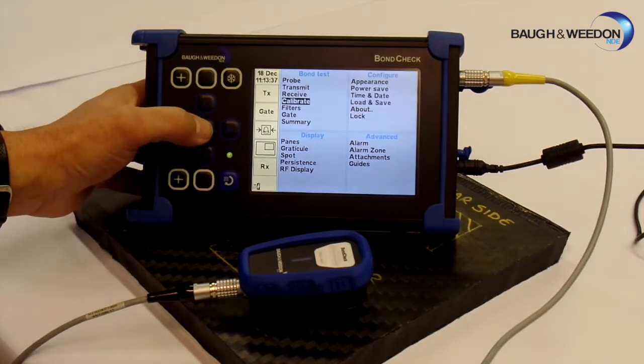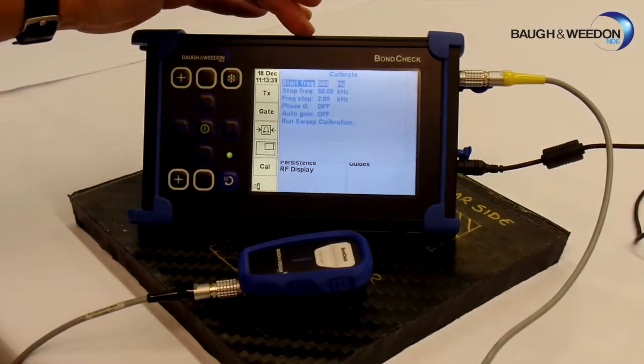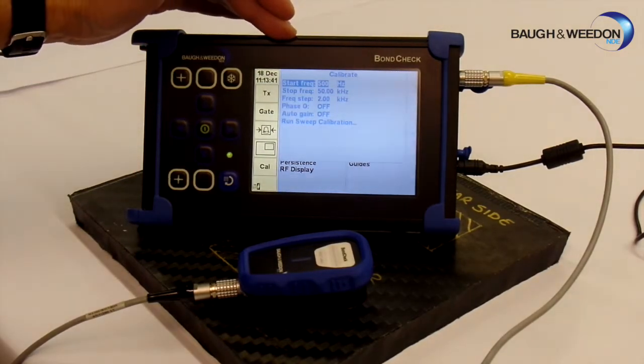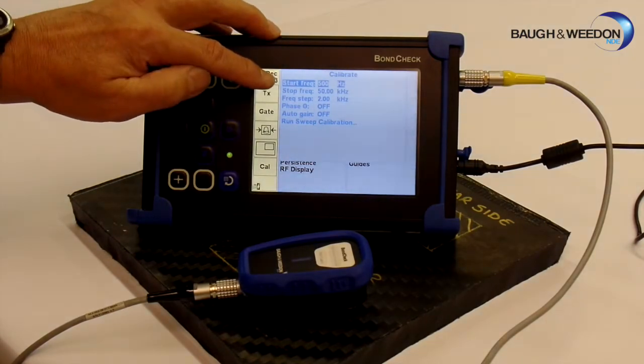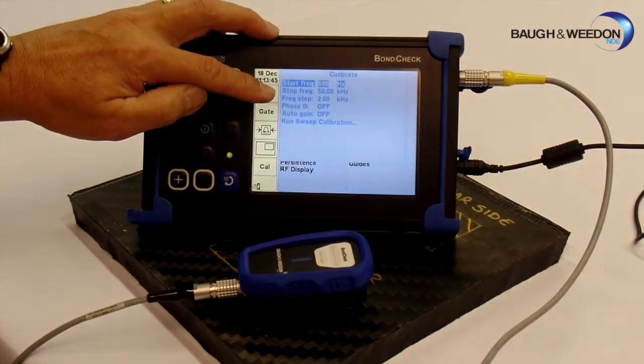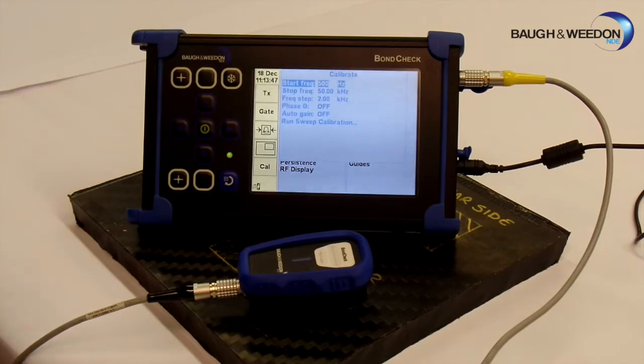We can now go down to calibrate, select calibrate. This unit has a frequency range that starts at 500 Hz and it goes up to 50 kHz. If we knew, or we are looking at an inspection that had already been written for another type of unit, we could adjust this so that we sweep over a smaller area.